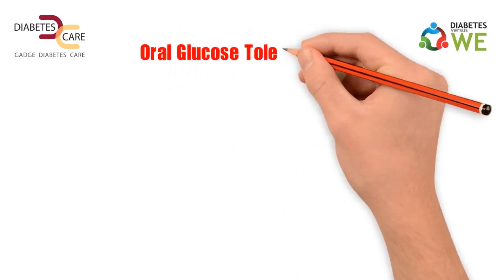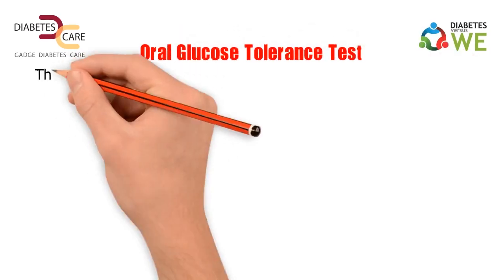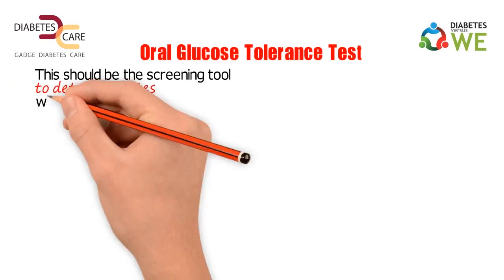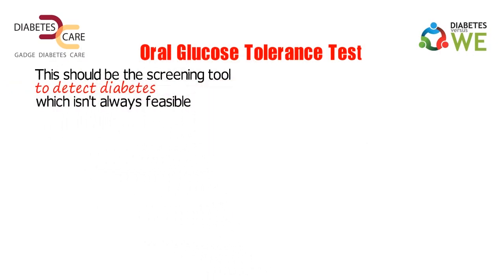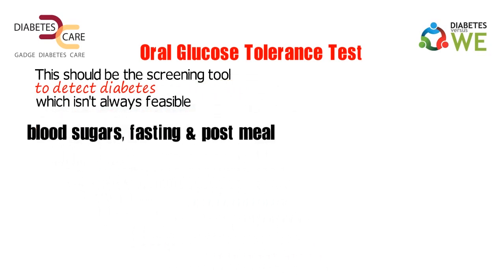The fifth type is the oral glucose tolerance test. Ideally, this should be the screening tool for every patient to detect diabetes, which is not always feasible. Hence, blood sugars — fasting and post-meal — are accepted as the norm to detect diabetes.